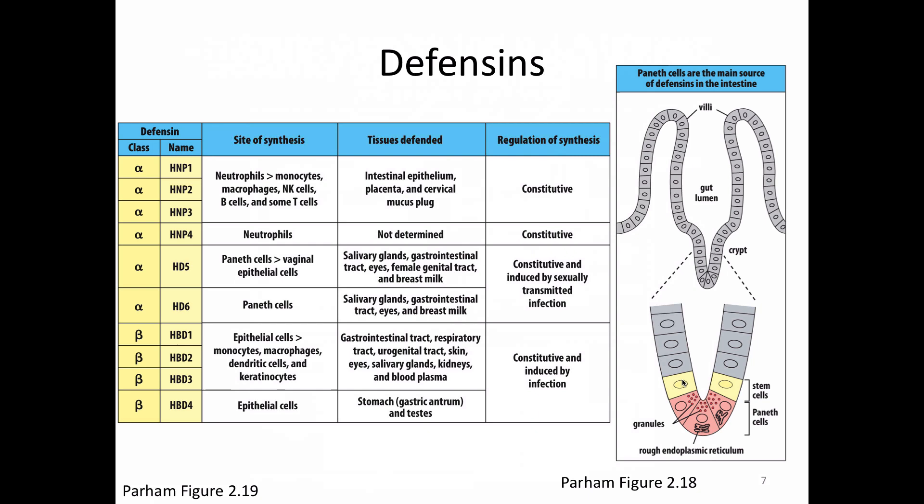One of the most famous places where defensins are discussed is in the crypt of the intestine. Many of the cells in the crypt are a special type called Paneth cells that are very good at making defensins. You can imagine that in your GI tract you're going to come into contact with a lot of microbes based on things you're eating, so having a lot of defense right there is really important.